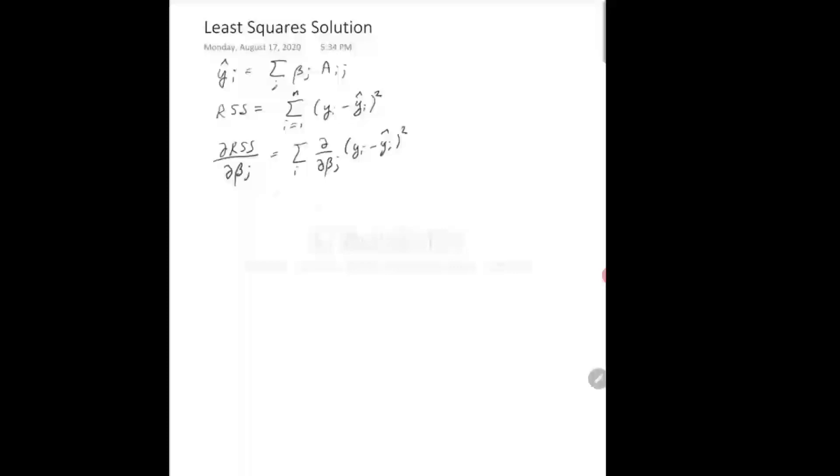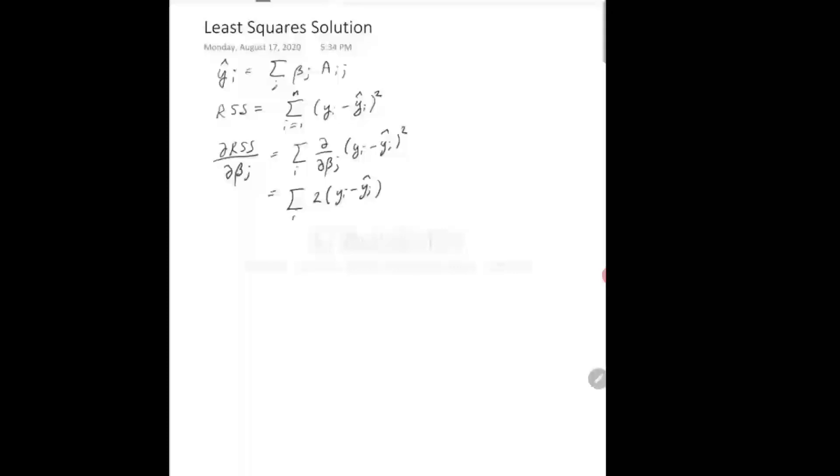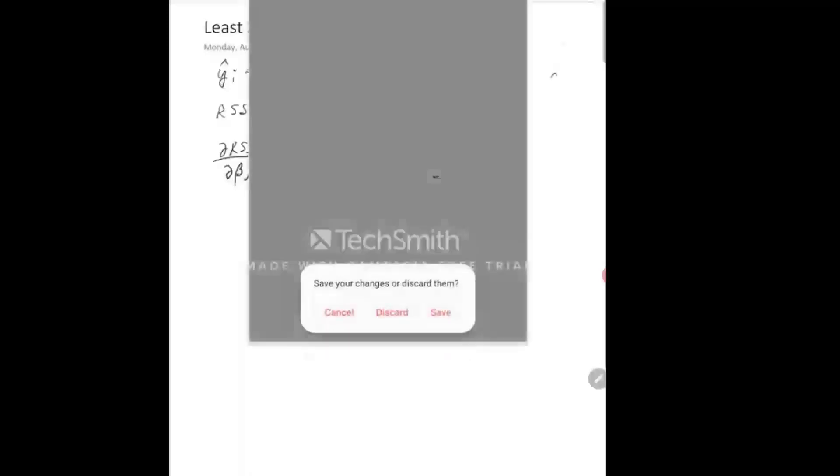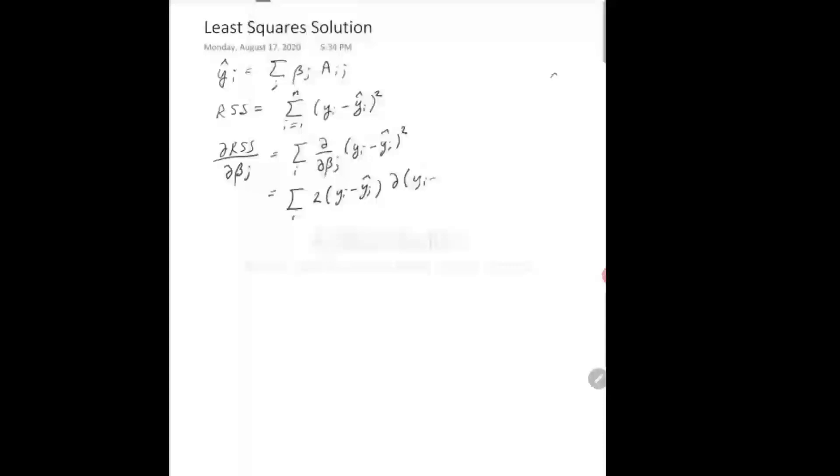Here, we next use chain rule. Remember that for chain rule, we can just say that's 2 times the difference. And times the derivative of this guy here, by the parameter beta j.